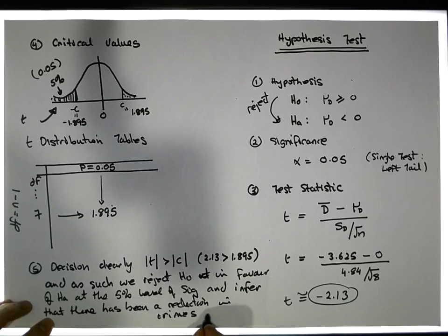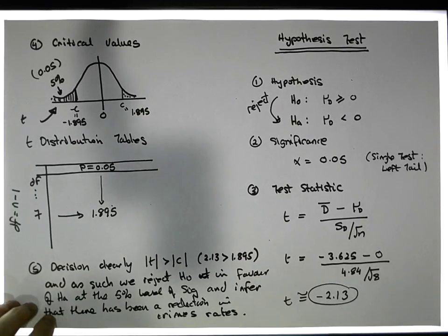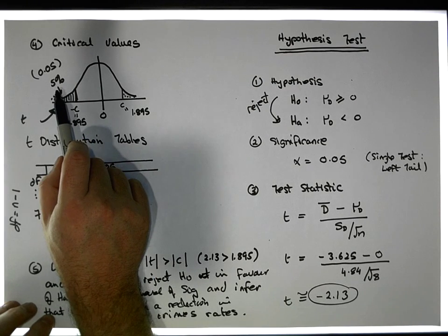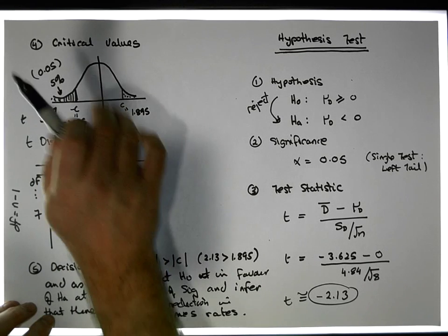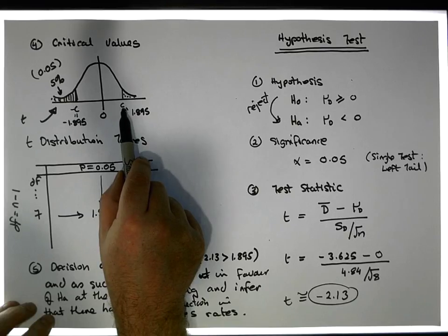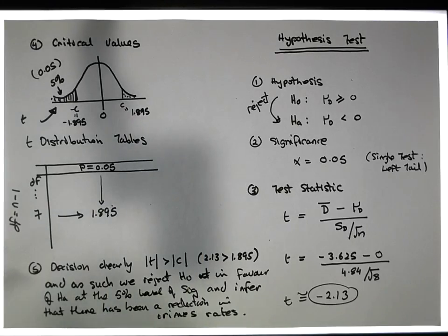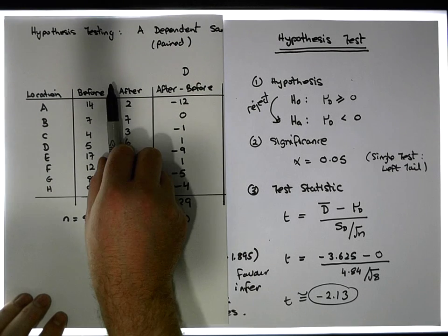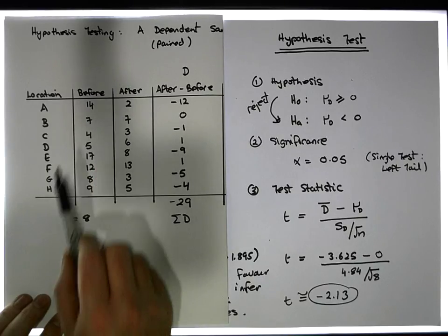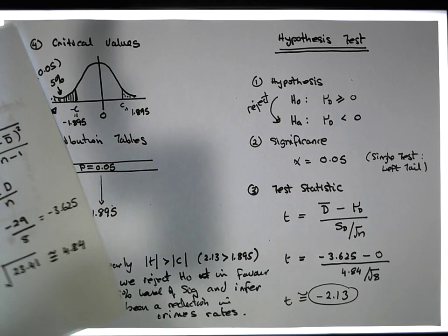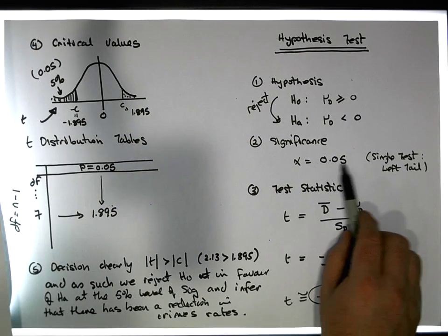This means there has been a reduction in crime rates across the regions. The only complication was that this was a left-tail test — our tables gave right-hand tail areas, but through symmetry the left-hand critical value is the same as the positive one but negated. So there's evidence to suggest that the intervention between the before and after measure actually worked, and we're 95% confident about that because we set our significance level at five percent.